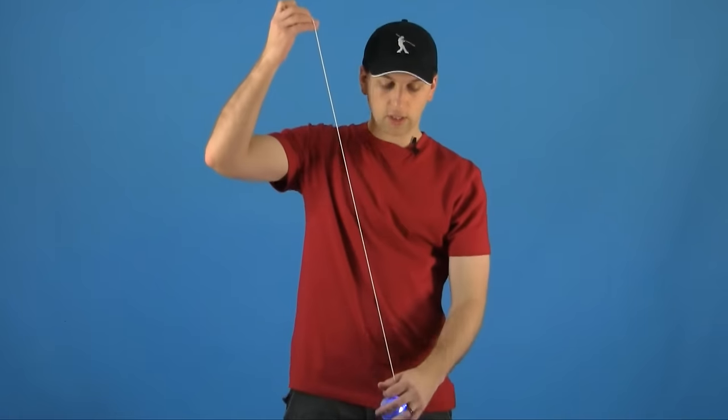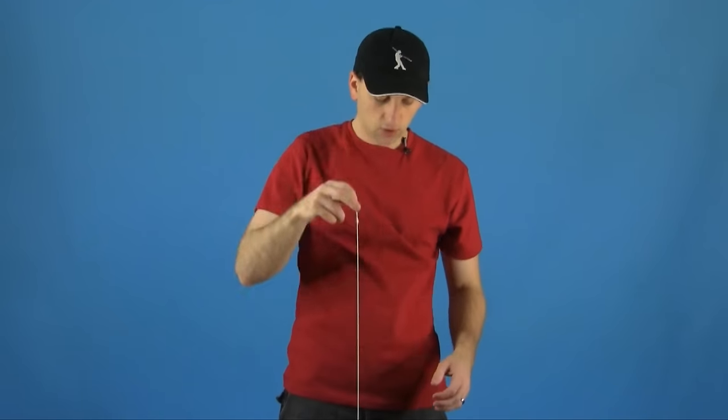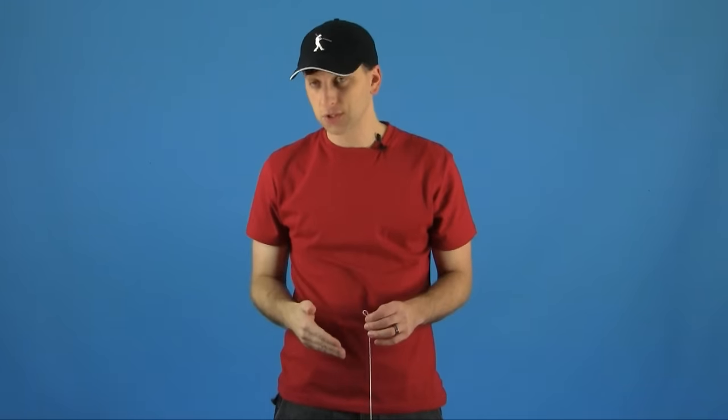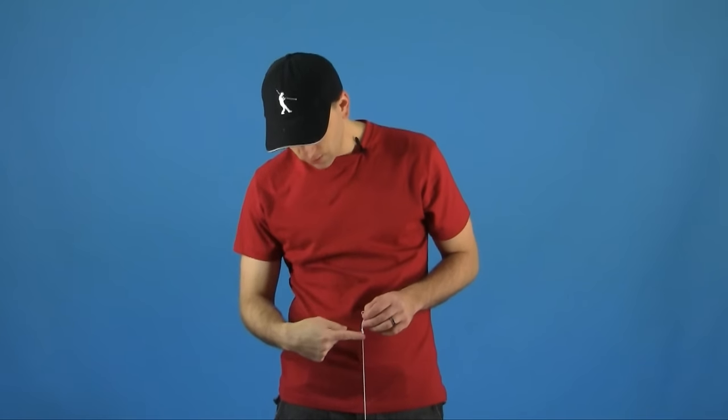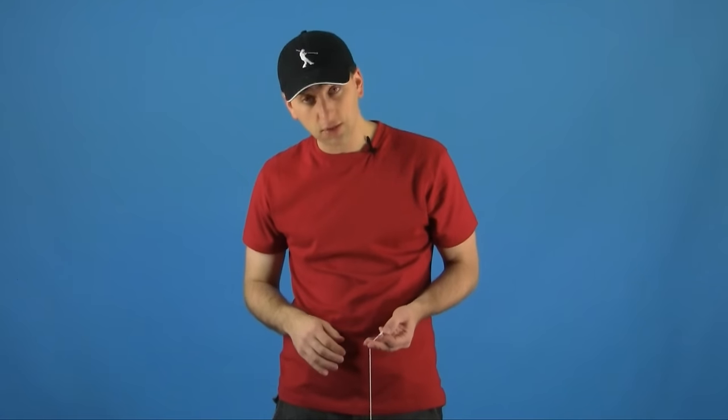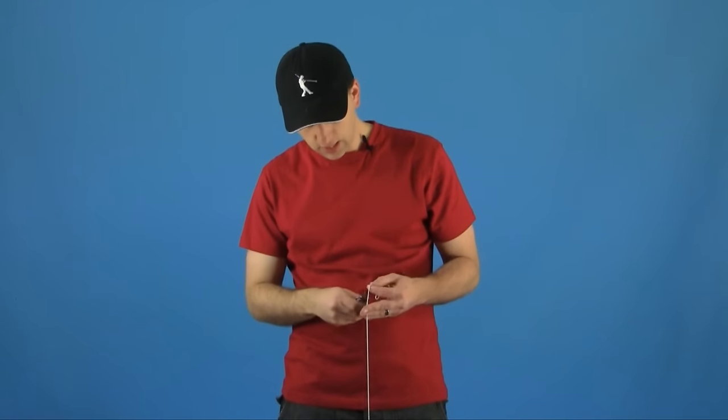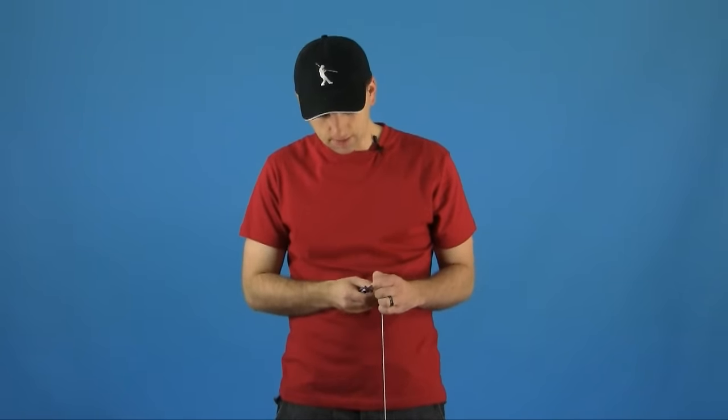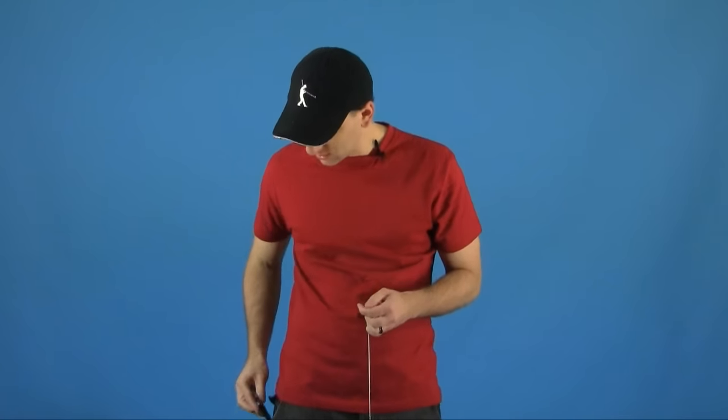Drop the yoyo all the way down and hold it so it's just barely touching the ground. Find where the string meets your belly button and pinch it right there. Get a pair of scissors and cut the string right where you were pinching it, then let it go.